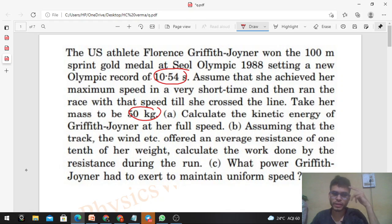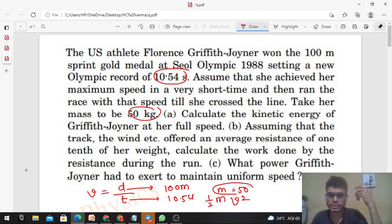Calculate the kinetic energy of Griffith Joyner at her full speed. So can you find out the speed of that athlete? Of course, that will be distance upon time. Distance kitna hoga? Distance is given 100 meter and time is given 10.54. From here we can calculate the speed of the athlete. Once you know the speed and mass, mass is also given 50 kilogram, what will be the kinetic energy? Half of m into v square. So mass is given and speed we can calculate.